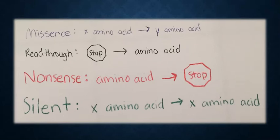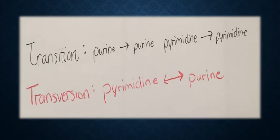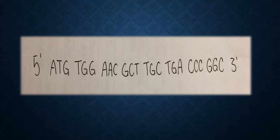In this video, I will be going over the following point mutations. You can pause the video right here to look at the definitions, but I will be going over them again later on in the video. The same goes for transition and transversion mutations. Now let's take a look at a normal DNA coding strand.